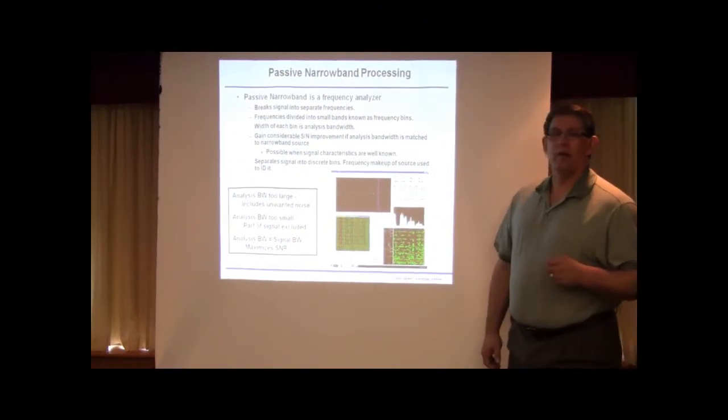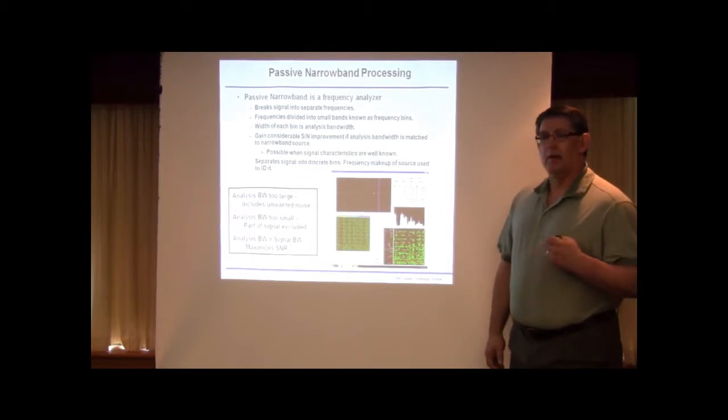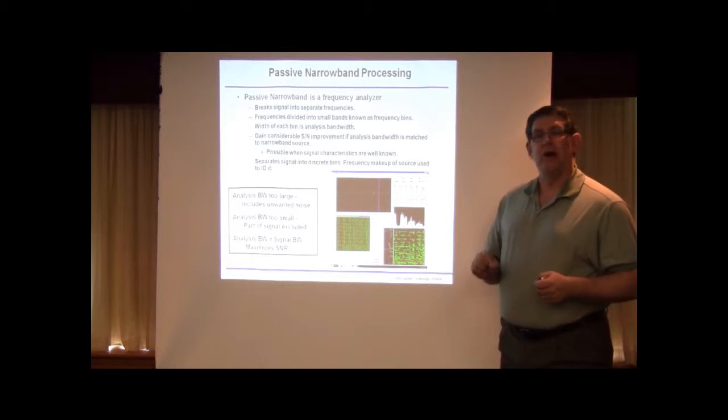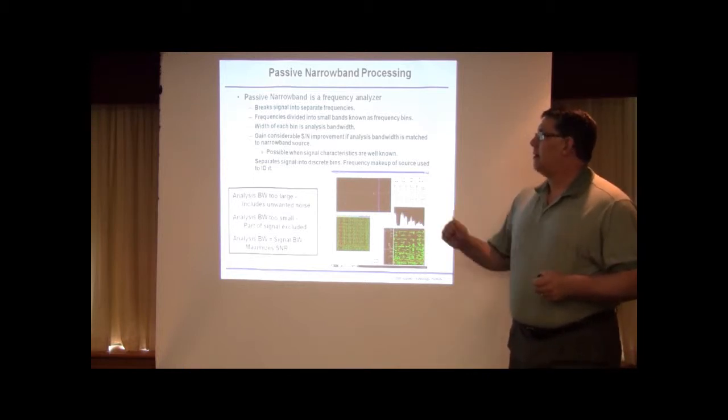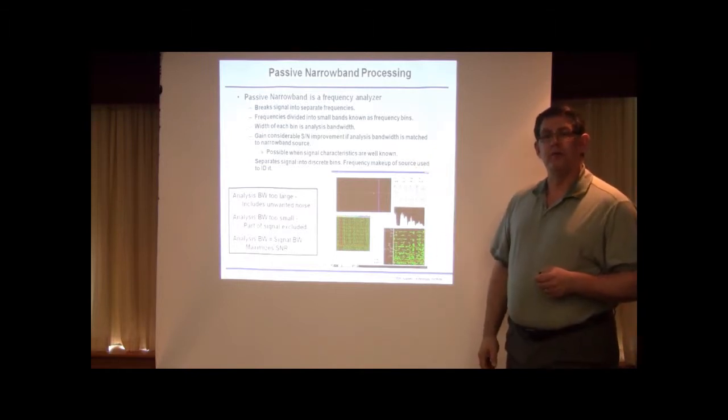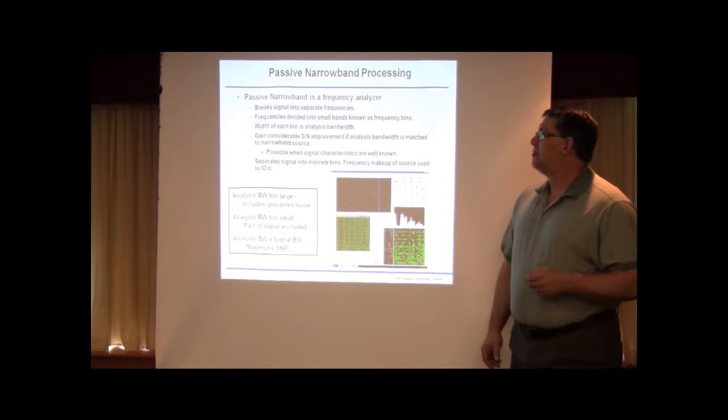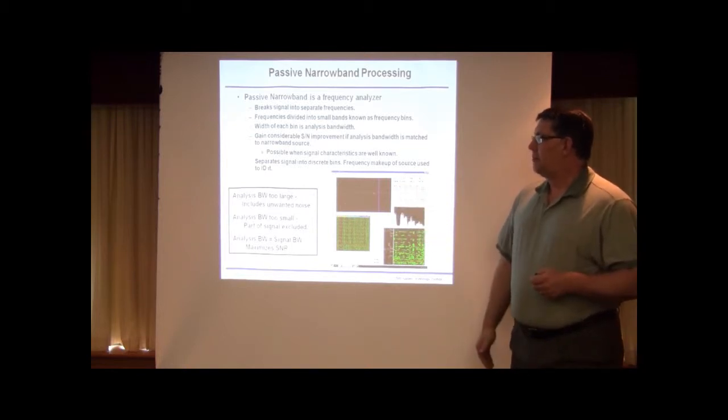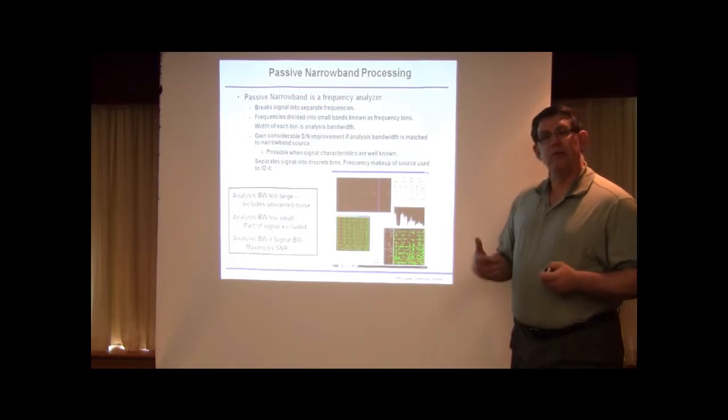We're going to talk about facet narrowband sonar processing, and it's just a general statement, it's a frequency analyzer. That is, it breaks the signal into small pieces of separate frequency and then analyzes those in those small bands. The width of each one of those bands is the analysis bandwidth, and we can get considerable signal-to-noise ratio improvement by looking at small pieces of the spectrum at a time, by reducing the noise that's around a signal. And so by separating into these discrete bands, the frequency makeup of a source can be analyzed in more detail.